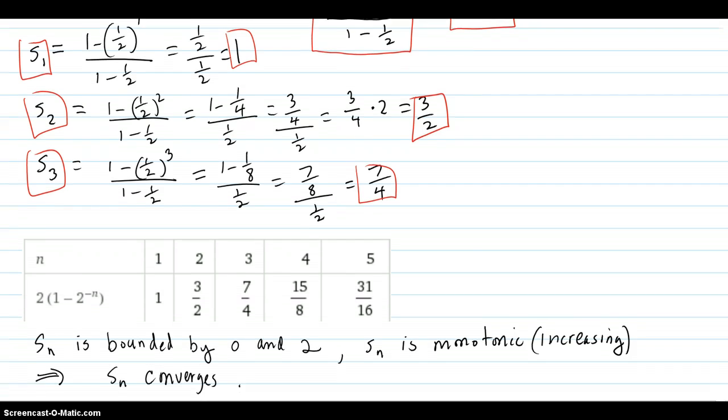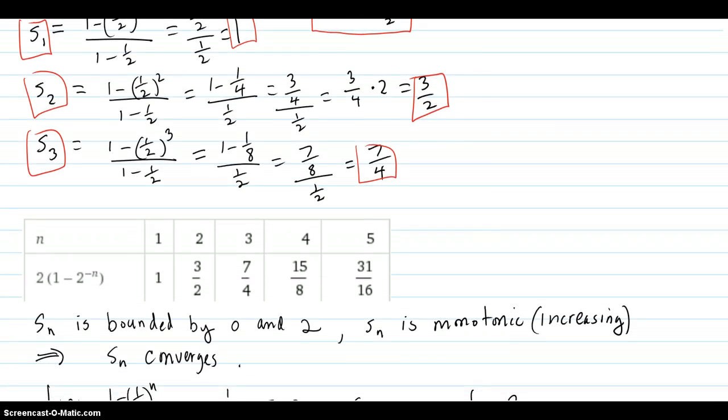And if you put the sequence into Wolfram Alpha, you find out on the fourth step you've gone fifteen eighths feet. On the fifth step, thirty-one sixteenths.